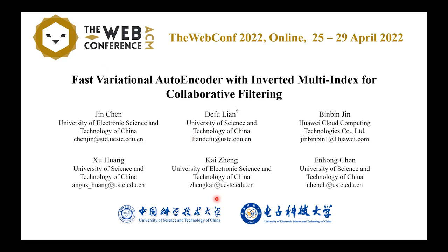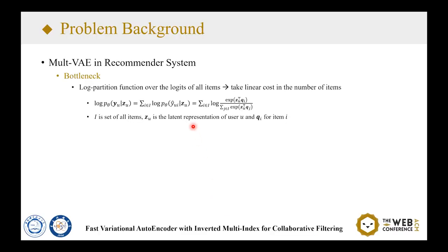In this work, we mainly focus on the efficiency issue in variational autoencoders. Variational autoencoder has been extended as a representative nonlinear method for collaborative filtering, such as multi-VAE. It has received much attention among the recommendation community. However, the bottleneck of multi-VAE lies in the log partition function over all items — that is, the denominator of the log softmax function. When there are an extremely large number of items, the training of multi-VAE is very time-consuming, making it impractical in real recommendation scenarios.